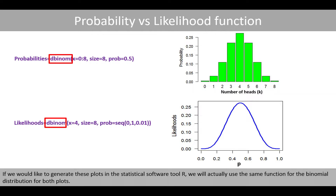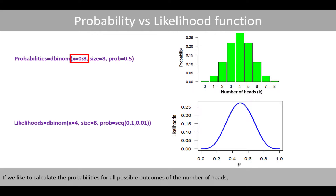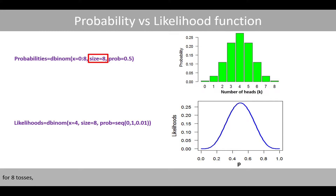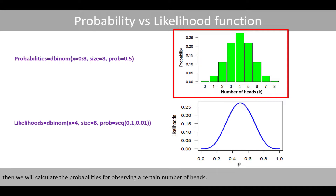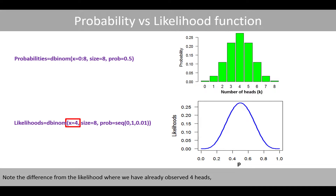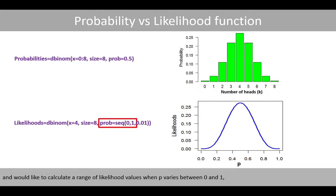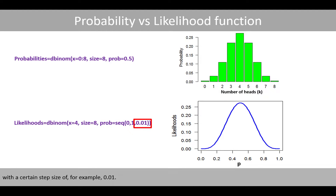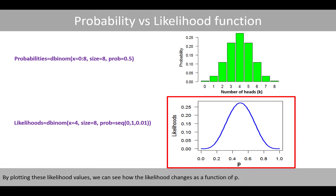If we would like to generate these plots in the statistical software R, we use the same function for the binomial distribution for both plots. To calculate the probabilities for all possible outcomes of the number of heads for eight tosses with a fair coin where p equals 0.5, we calculate probabilities for each number of heads. For the likelihood, where we have already observed four heads out of eight tosses, we calculate a range of likelihood values as p varies between 0 and 1 with a step size of 0.01. By plotting these values, we can see how the likelihood changes as a function of p.